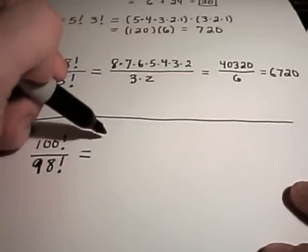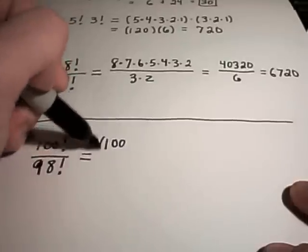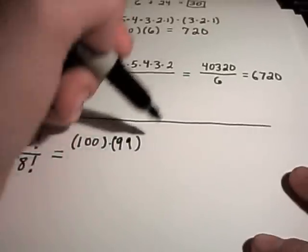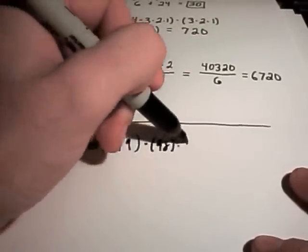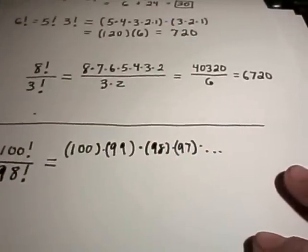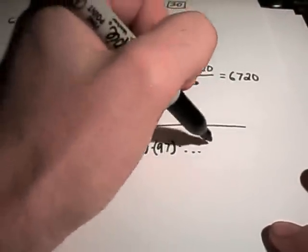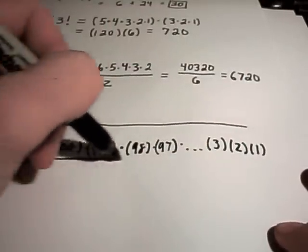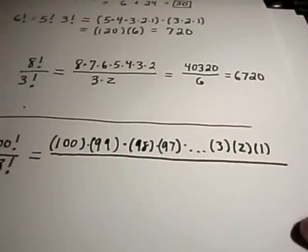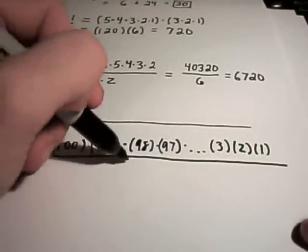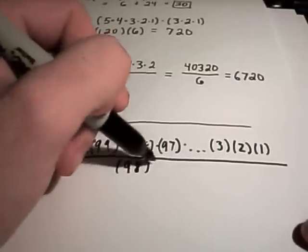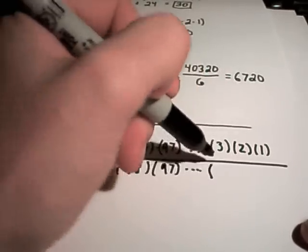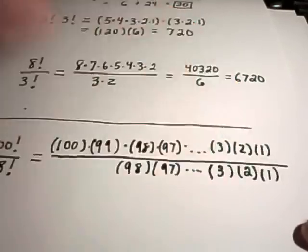Let's start writing things out. Notice, 100 factorial would be 100 times 99 times 98 times 97. I don't want to write every single number all the way down, but eventually if I listed them all out I would end up with 3 times 2 times 1. Notice on the bottom, 98 factorial - well, 98 is simply 98 times 97 times 96 times 95 times 94, and eventually I'll get down to 3 times 2 times 1.